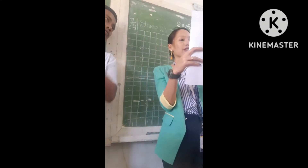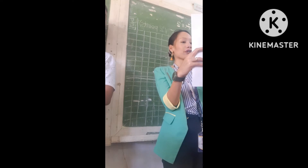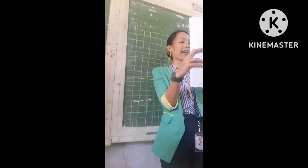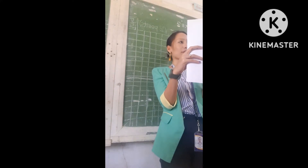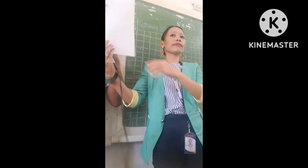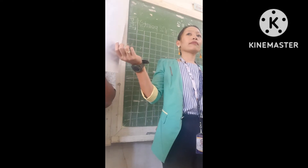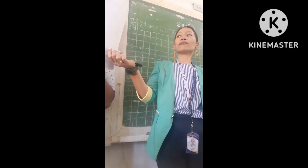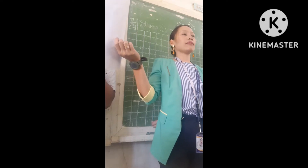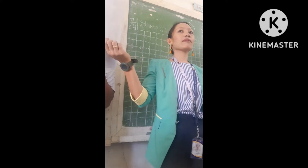Two more questions to go. Let's proceed to question number 14. What is the total population of Misamis Oriental based on the 2020 census of population? Letter A: 865,750. Letter B: 956,900. Letter C: 1,155,564. Letter D: 785,987.